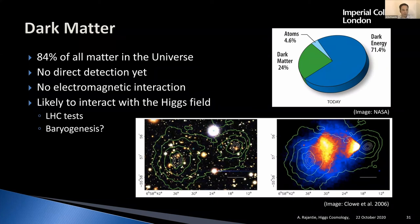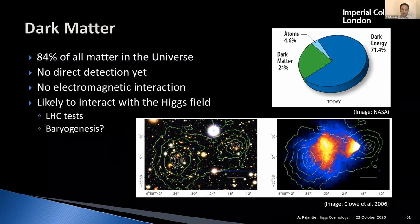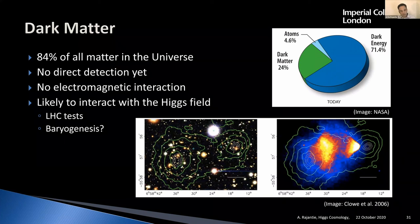The Higgs interaction with dark matter could also influence the behavior of the Higgs field, for example during the electroweak phase transition, because there would have been a lot of dark matter around. This could potentially explain why the electroweak phase transition works in spite of the Higgs mass not being light enough by itself. We don't know yet because we haven't found the particles — there are many different types of searches ongoing.